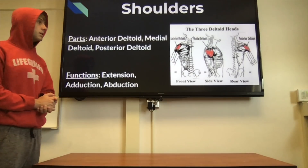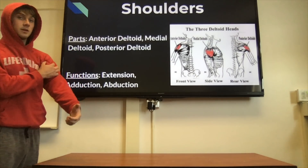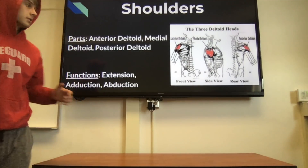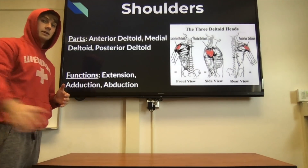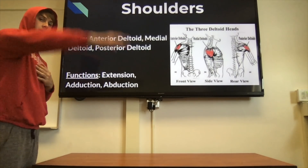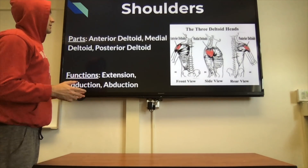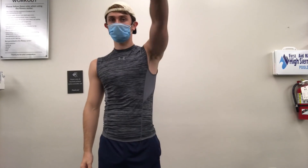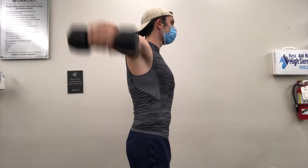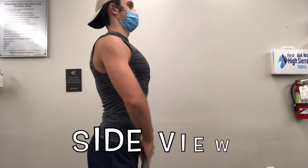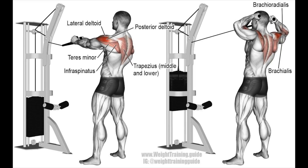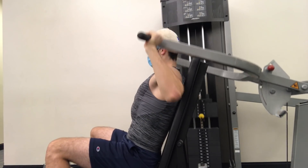The shoulders have three parts: the anterior deltoid, meaning the front of your shoulder; the medial deltoid, meaning the middle; and the posterior deltoid, the back. The shoulder is responsible for any way your arm moves — extension, adduction, abduction, rotating, lifting. If you want strong shoulders, target all three heads. The front deltoid is targeted with front raises. The medial deltoid with side raises. The posterior head with plate pulls or face pulls — face pulls are really good for posture. You can also do military presses, which work the entire shoulder.